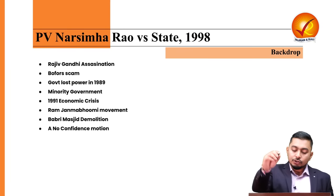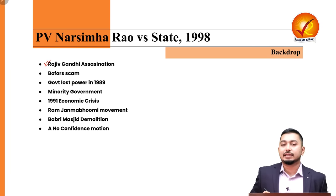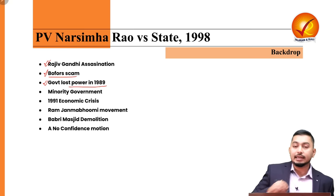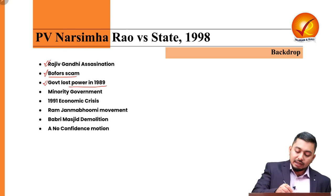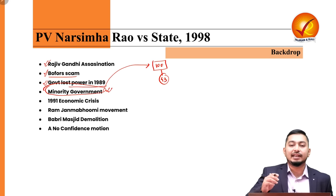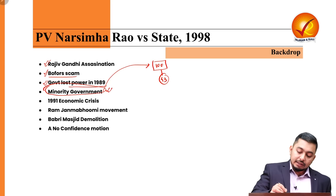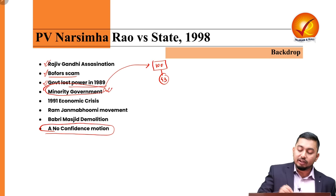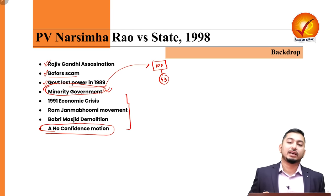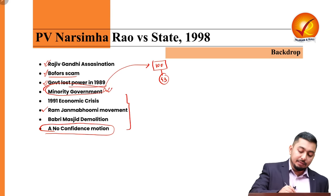The backdrop was that Prime Minister Rajiv Gandhi was assassinated, the Kargil war was ongoing, the Bofors scam occurred, and the government lost power in 1989. It was a period of tumult. A minority government was formed — with only 43 legislators' support out of 100 seats, they still formed the government but had to prove majority later. There was a hanging no-confidence motion, and India was facing the 1991 macroeconomic crisis and the Ram Janmabhoomi movement and Babri Masjid demolition.